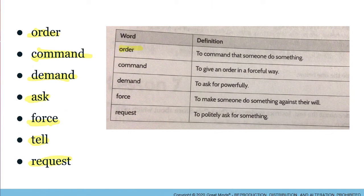When you order something to happen, it is a command that someone do something. Command means to give an order in a forceful way. I command you to do this. Demand is to ask for something powerfully. I demand you to do this now. Force is to make someone do something against their will. So they might not want to do it, but you force them to. Request is to politely ask for something.